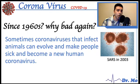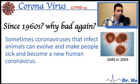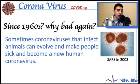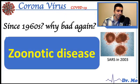So if these viruses have been around since the 1960s, why are they bad again? Sometimes coronaviruses that infect animals can evolve and make people sick as well, becoming a new human coronavirus that we have no vaccines for and no treatment for. This is called a zoonotic disease, meaning it moves from the animal to the human.